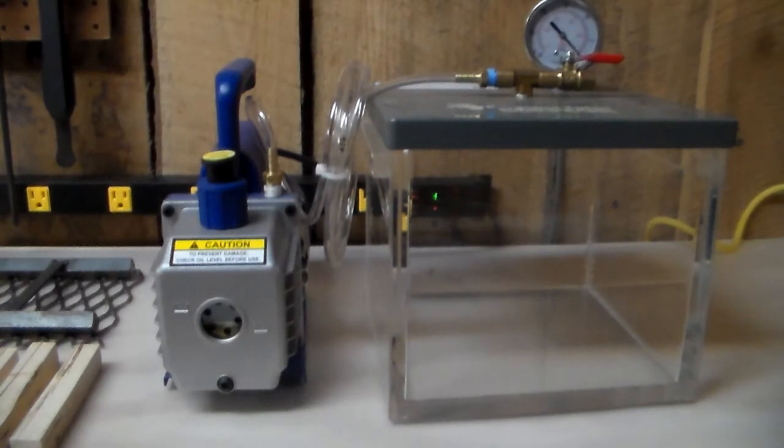This is the 8x8 chamber from Turntex. He also sells cactus juice, the stabilizing resin. We'll talk about it here in a minute. The vacuum pump you see beside the chamber is a 3 CFM pump. It's a small pump. I got it from eBay. It was $74.